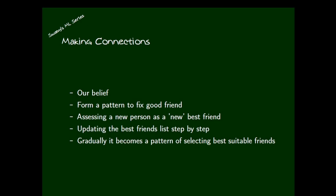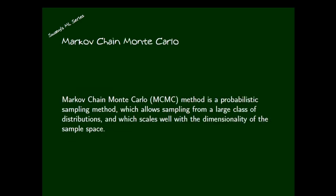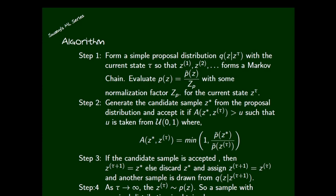So what is really Markov Chain Monte Carlo? Markov Chain Monte Carlo (MCMC) is a probabilistic sampling method which allows sampling from a large class of distributions and which scales well with the dimensionality of the sample space. Some people call it Monte Carlo Markov Chain and some textbooks call it Markov Chain Monte Carlo — we can use both interchangeably, but the most correct term is Monte Carlo Markov Chain, because the Monte Carlo distribution is used to create our prior and likelihood distributions.